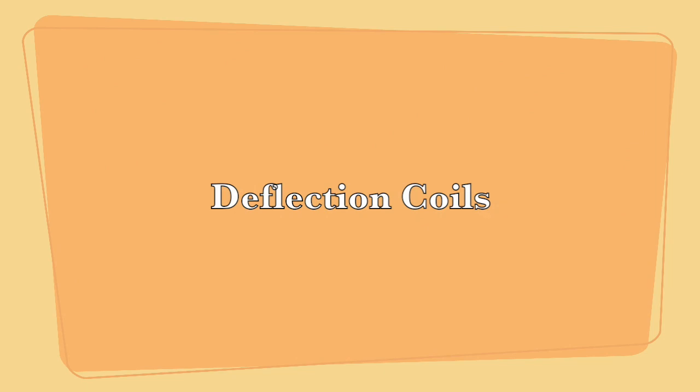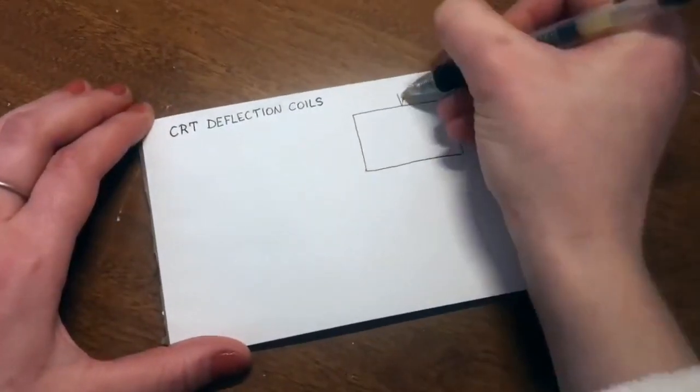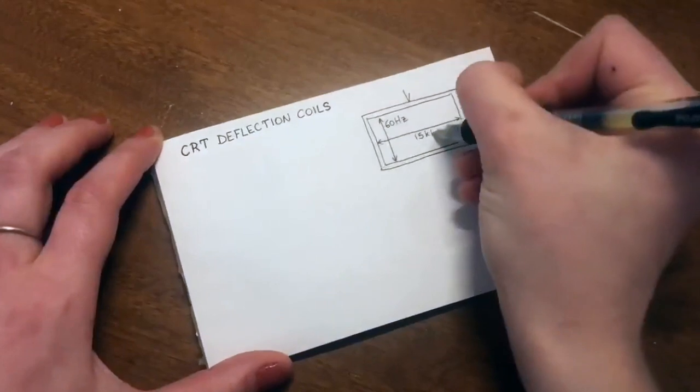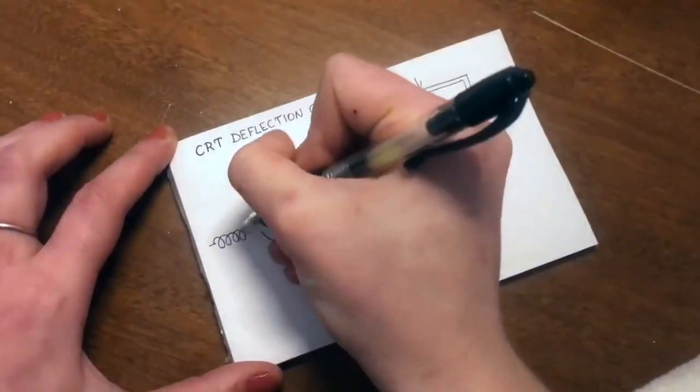Now let's talk about deflection coils. There are two pairs of deflection coils, one that deflects the beam vertically and the other one horizontally.